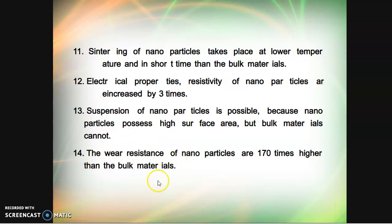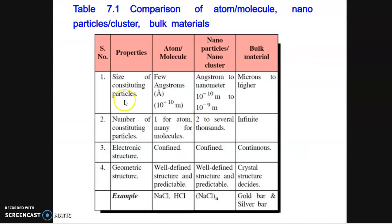Most nanoparticles are very advantageous, and that is what we are going to learn in this unit. Here you could see some properties: comparing molecules, nanoparticles, and bulk materials. Size of constituent particles—atoms range in few angstrom units, whereas nanoparticles range from angstrom to nanometer (10^-10 to 10^-9 meters), and bulk materials range in microns (10^-6 meters or higher). Number of constituent particles: one or many atoms for molecules, two to several thousands for nanoparticles, and infinite for bulk materials.